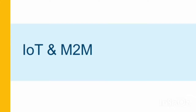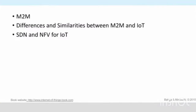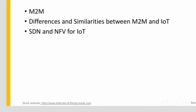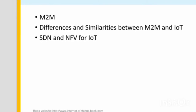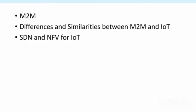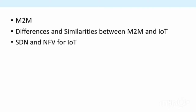Good morning students. In this lecture we are going to discuss about IoT and M2M. M2M is machine-to-machine network. The outline of this lecture covers M2M, differences and similarities between M2M and IoT, SDN and NFV for IoT. SDN and NFV are the models we are using in IoT.